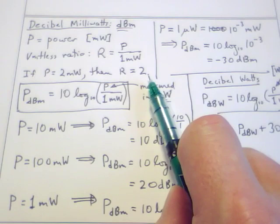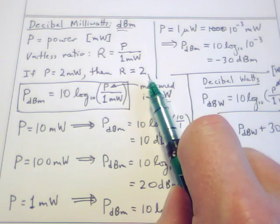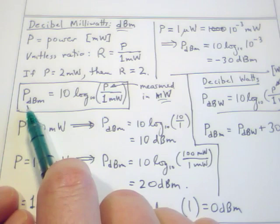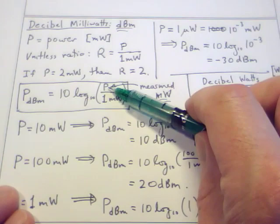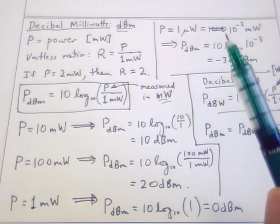Very similar to the definition of the decibel, I'm going to define the decibel milliwatt P in dBm units as 10 log base 10 of that power divided by one milliwatt. The power that we plug into this equation to make this calculation has to be in milliwatts.